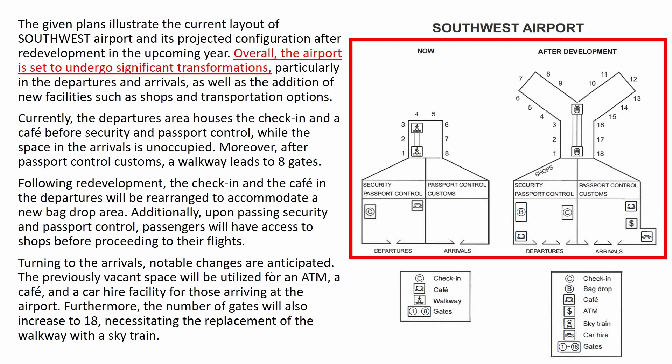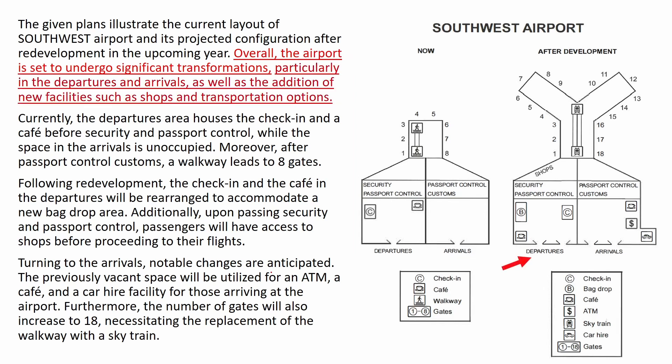Continuing with the overview: 'Overall, the airport is set to undergo significant transformations.' That's still too general, so I need to be more specific. I'll add: 'particularly in the departures and arrivals areas, as well as the addition of new facilities such as shops and transportation options.' If you'd like to mention the gates, you could do that as well.